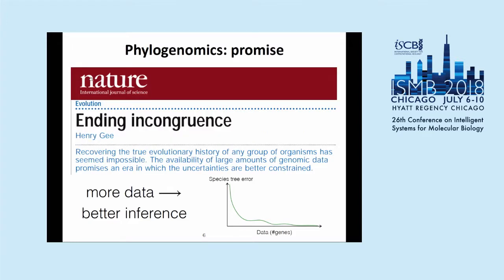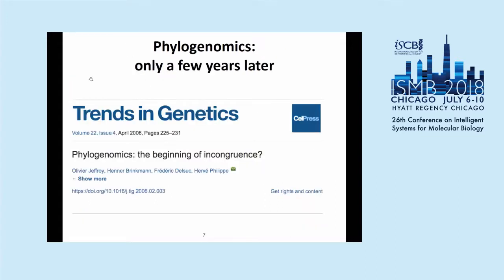This was the promise. People wrote papers saying phylogenomics is going to bring about the end of incongruence — we can now infer phylogenetic trees with a lot of confidence because we have genomes. Very shortly after, people started writing papers with the opposite title: phylogenomics, the beginning of incongruence. It turned out that with these huge datasets, the problems of incongruence between various phylogenetic inferences not only didn't go away — in some ways they became more obvious.